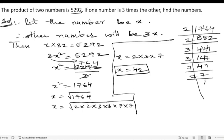So 42 is the smallest number. So one of the numbers is 42. Then the other number we will find out.